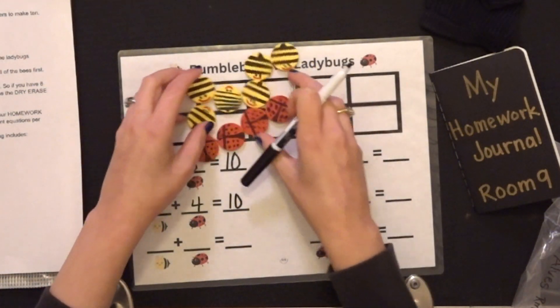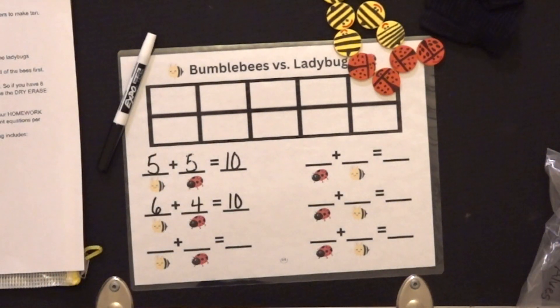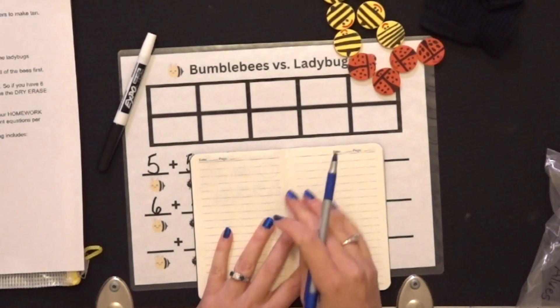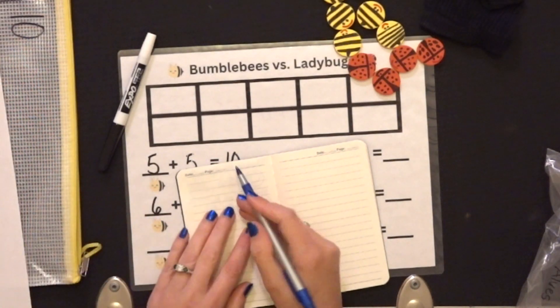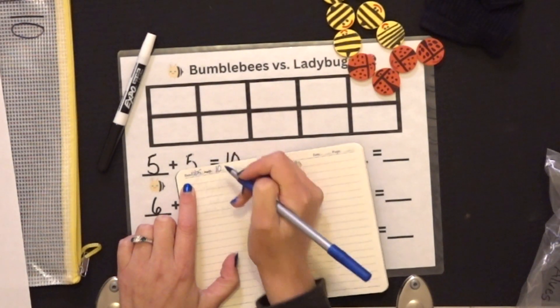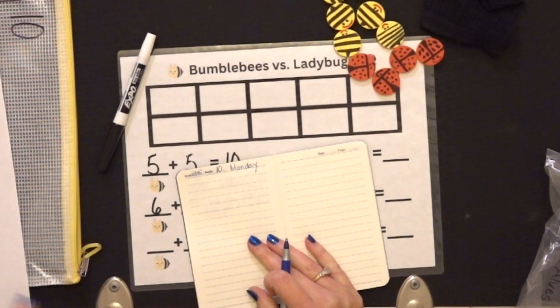I am going to keep going until I have the entire sheet filled up. Once I do that, I will take out my journal and go to the next available sheet. Where it says page, I am going to cross out that word and write the bag number — bag 10. Then I am going to put today's date and the day. So I will write Monday. I will record three different equations each night — Monday, Tuesday, Wednesday, Thursday.